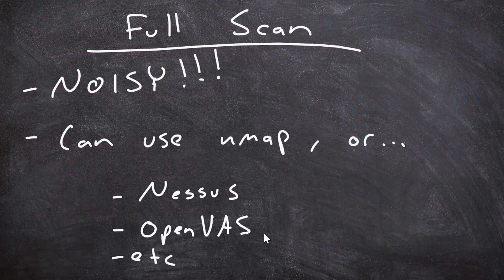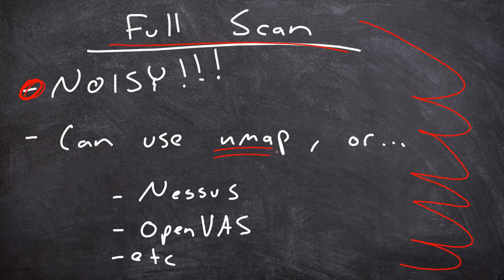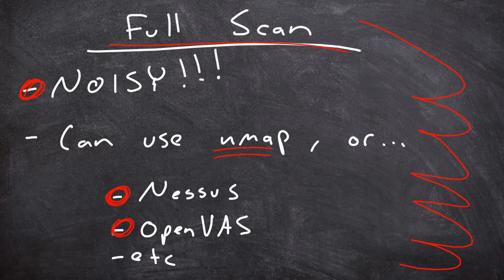Once we know what's there and we can target our attacks, or we're not afraid of being noisy anymore, that's where we can do a full scan. A full scan is not just going to show us what's there, but it's also going to scan for ports and scan for vulnerabilities on its particular software packages and things like that. We can use Nmap for full scans and get a lot of information — things like banner grabs and all that sort of stuff.